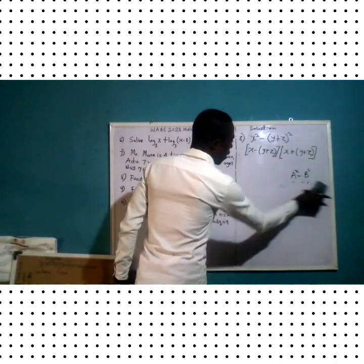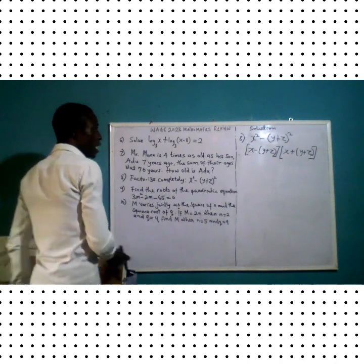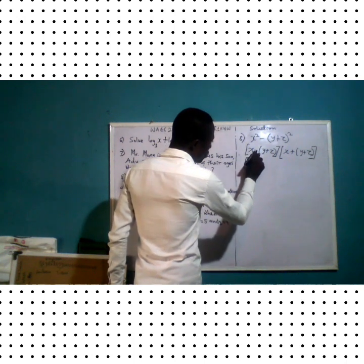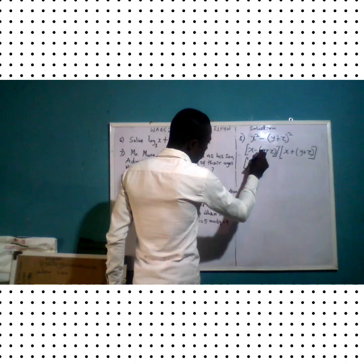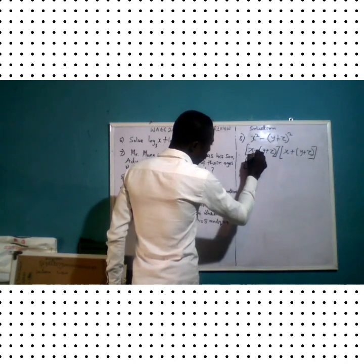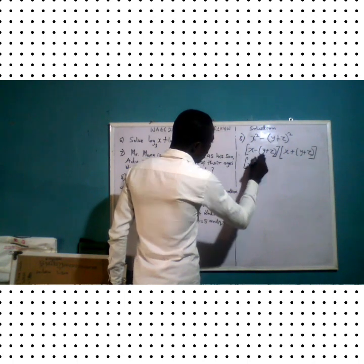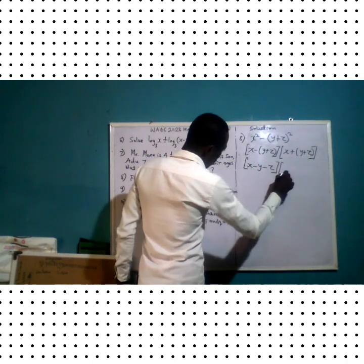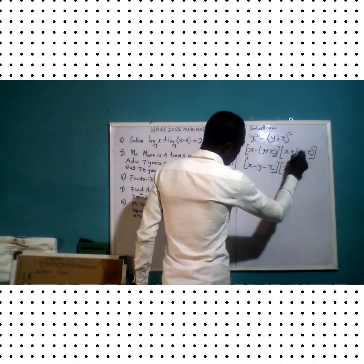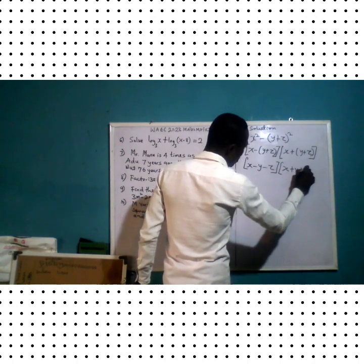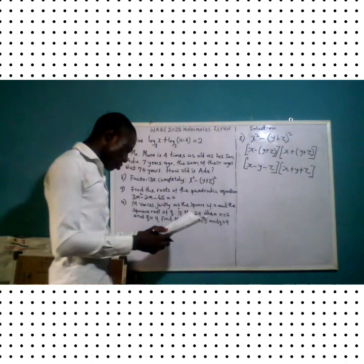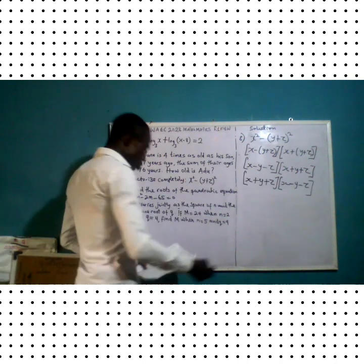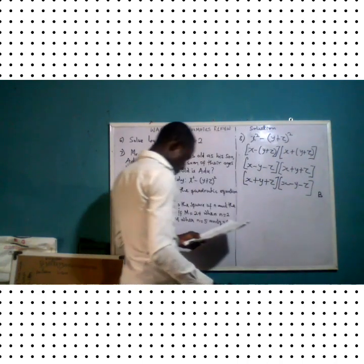Opening the inner brackets: the first factor becomes (x minus y minus z) since negative times positive y gives negative y and negative times positive z gives negative z. The second factor becomes (x plus y plus z). Looking at the options, the correct option is option B.